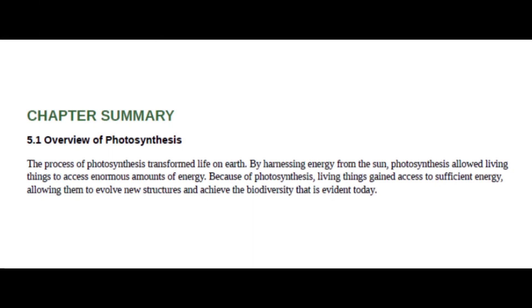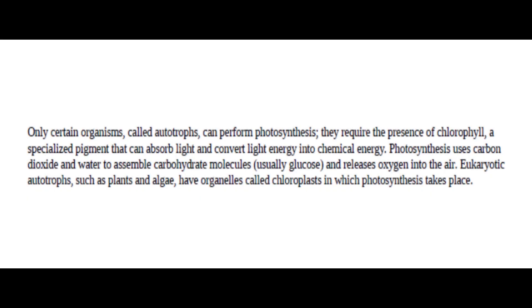Section 5.1: Overview of Photosynthesis. The process of photosynthesis transformed life on Earth. By harnessing energy from the sun, photosynthesis allowed living things to access enormous amounts of energy, allowing them to evolve new structures and achieve the biodiversity that is evident today. Only certain organisms, called autotrophs, can perform photosynthesis. They require the presence of chlorophyll, a specialized pigment that can absorb light and convert light energy into chemical energy.